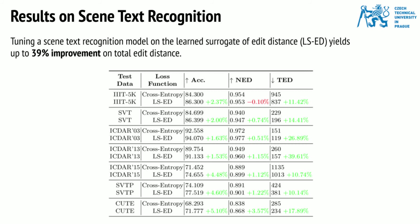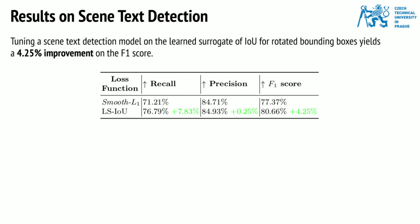Tuning a syntax recognition model on the learned surrogate of added distance yields an improvement of up to 39% on total added distance. Tuning a syntax detection model on the learned surrogate of intersection over union for rotated bounding boxes yields an improvement of 4.25% on the Euclidean score.